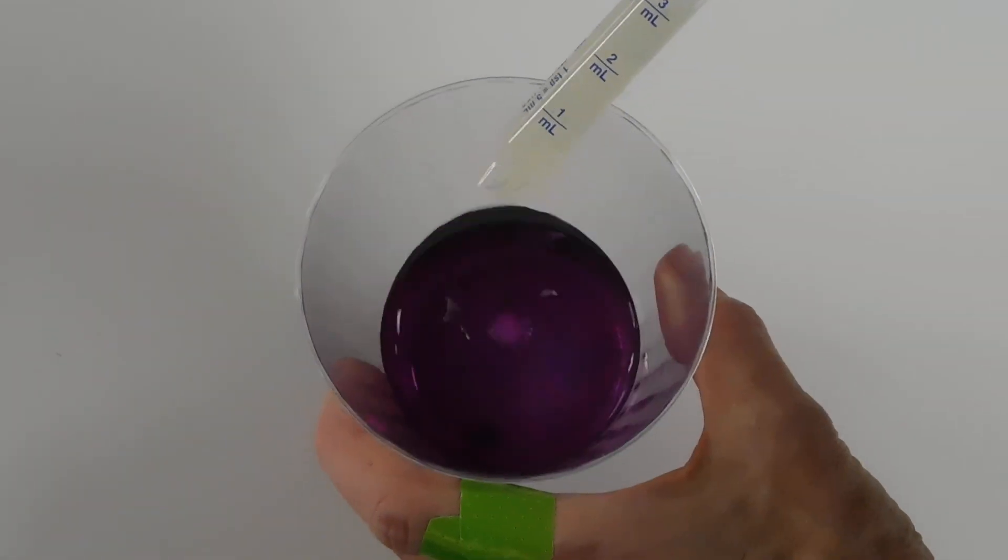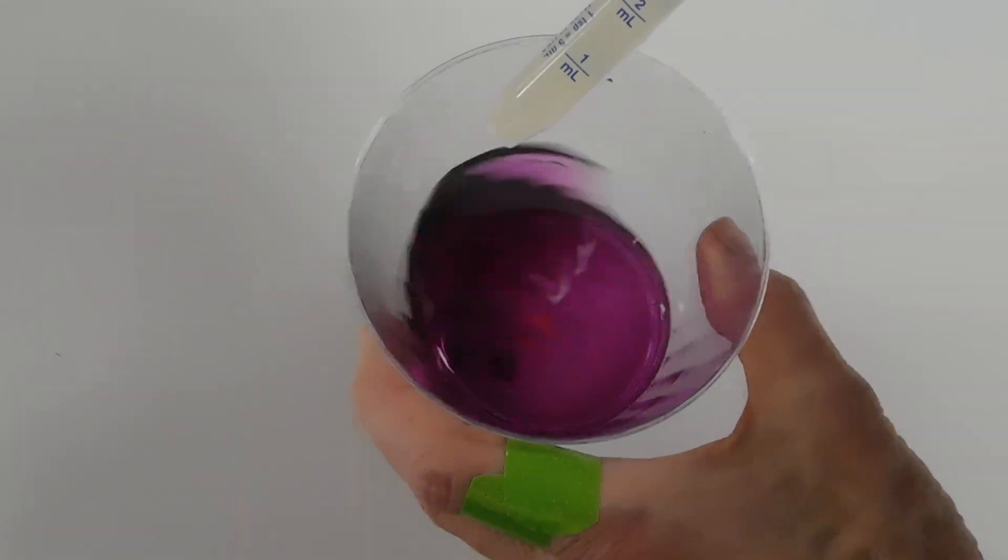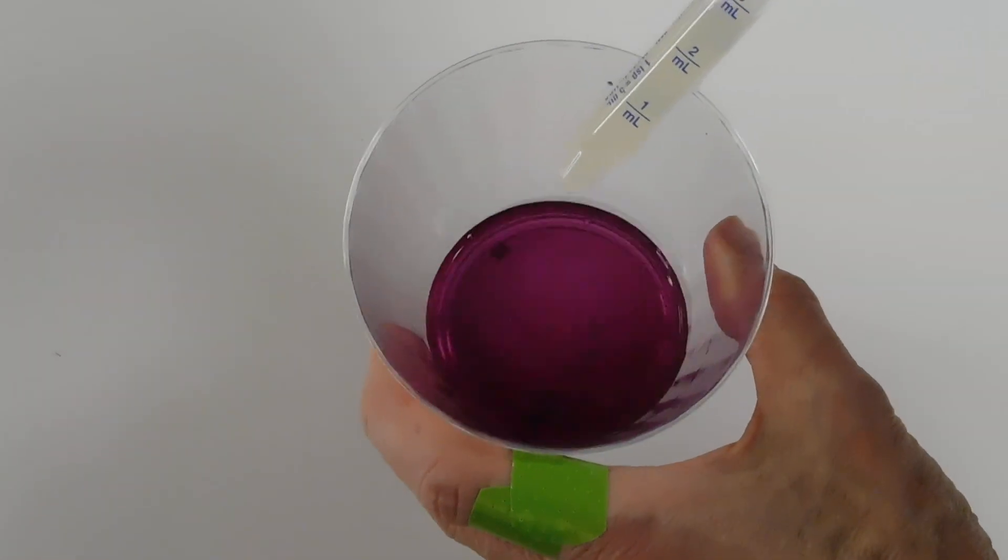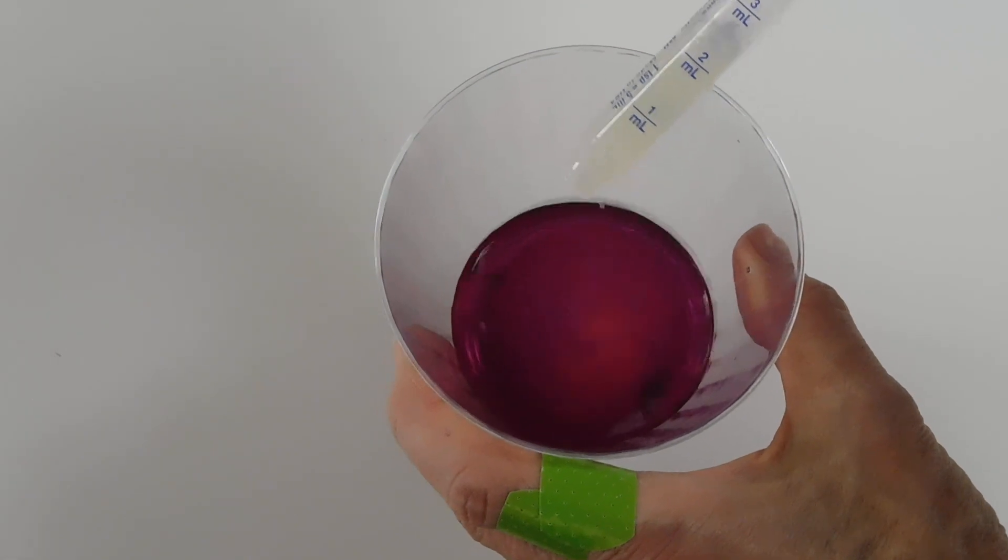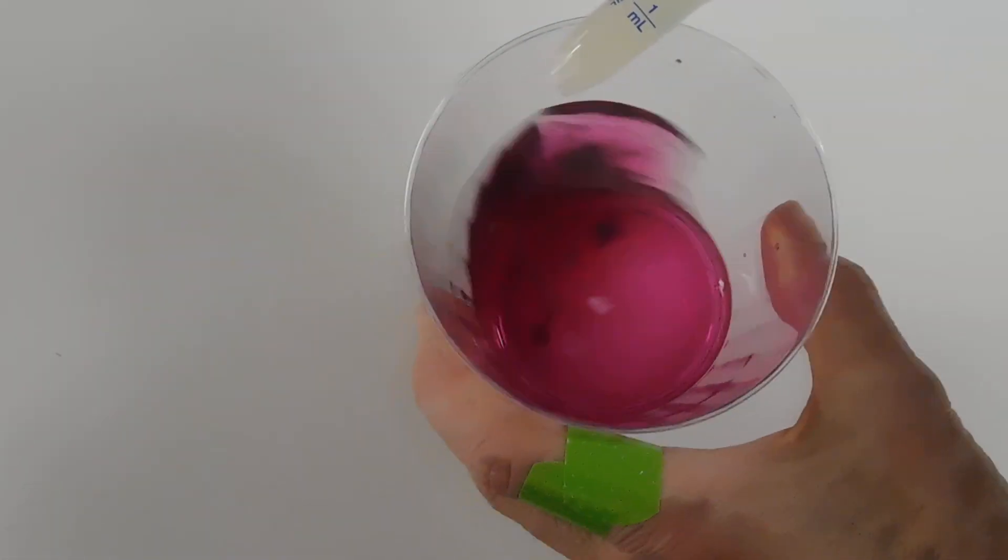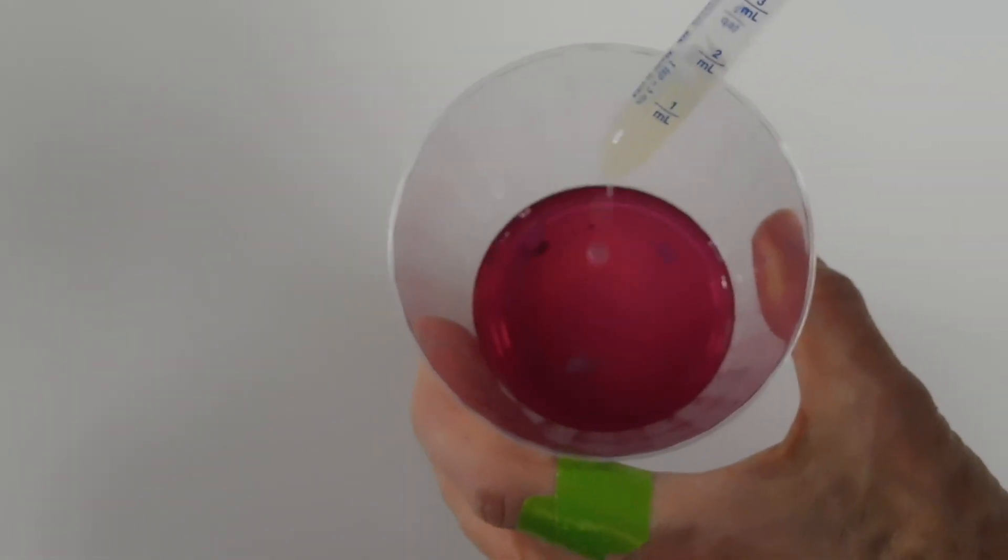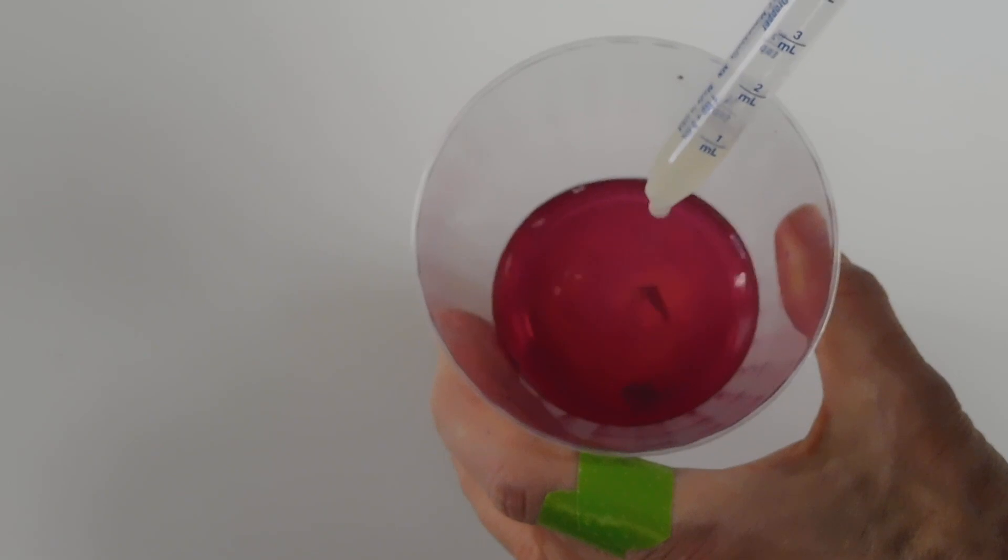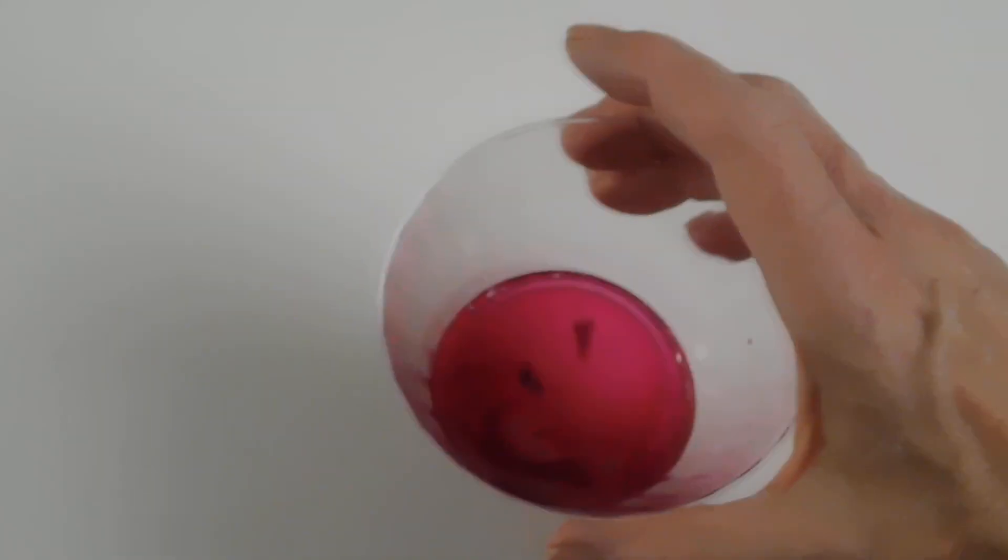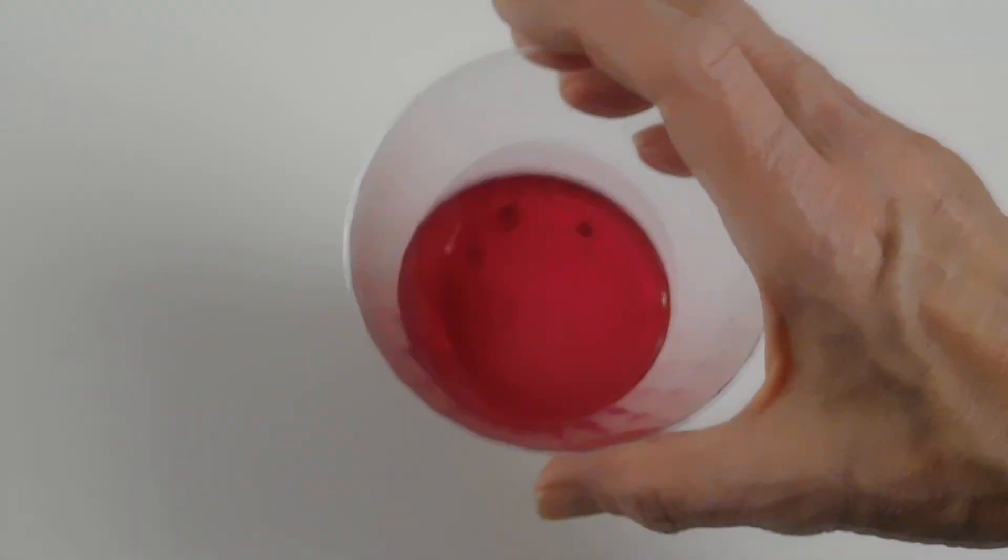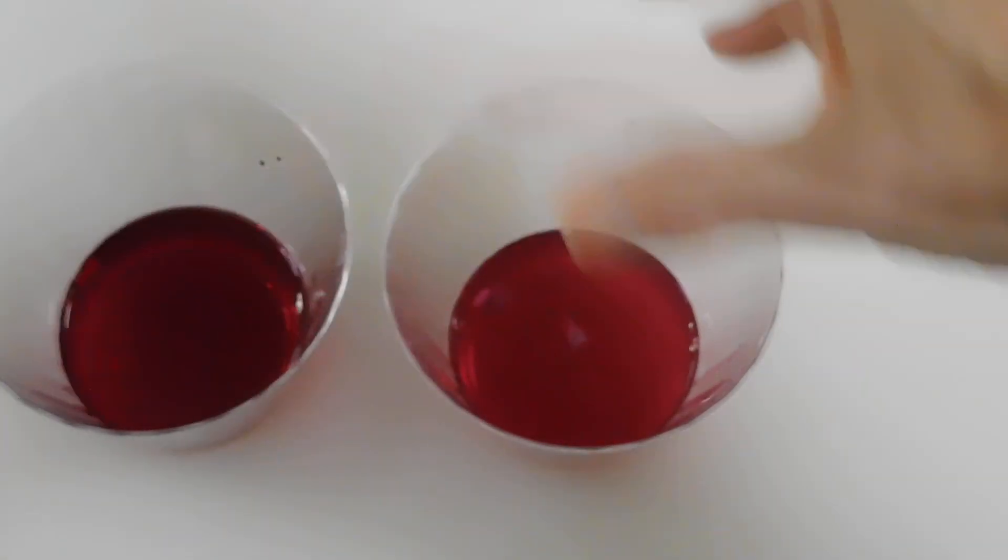Still purple. It's gone to the pink side now. Still pink. So lemon juice, which you probably already guessed, is an acid. Let's compare the two.